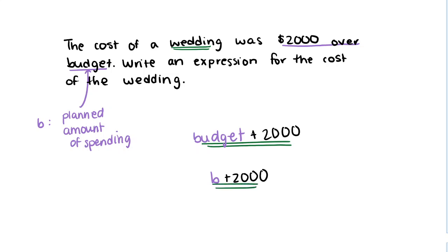This is a good strategy when building expressions: try out a concrete number for your unknown value to get a sense of how you'd put things together. If you knew one example of that unknown number, it gives you an idea of how to build your expression.